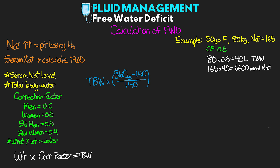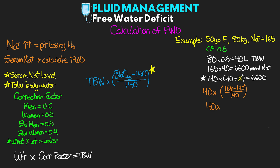So if we multiply 165 times the 40 liters, we know that she has 6,600 millimoles of total sodium. Since we know that this total amount doesn't change, we know that if we want a serum sodium of 140, then we would multiply 140 times (40 plus some extra amount of fluid, which we'll call x), and that this equals the same 6,600. We can use the formula: free water deficit equals total body water times (serum sodium minus 140) divided by 140. Plugging in our numbers: 40 times (165 minus 140) divided by 140, which is 40 times 25/140, giving us 40 times 0.17857, which equals 7.14 liters — and this is her free water deficit.